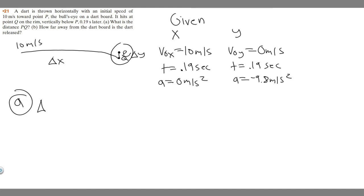The formula we're going to use is ΔY = V₀y*t + ½at². We have every variable, we just have to plug it in and solve for ΔY. So ΔY equals V₀ in the Y direction, that's 0, times the time 0.19, plus ½ times the acceleration in the Y direction minus 9.8 times t squared, which is 0.19 squared.